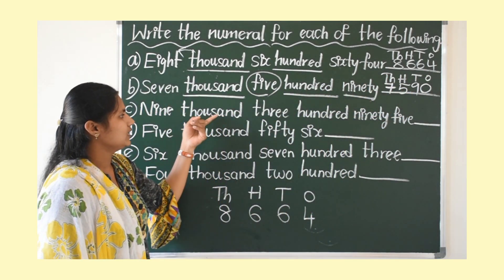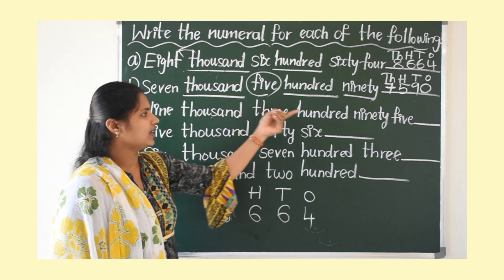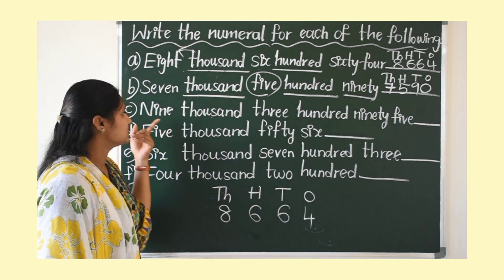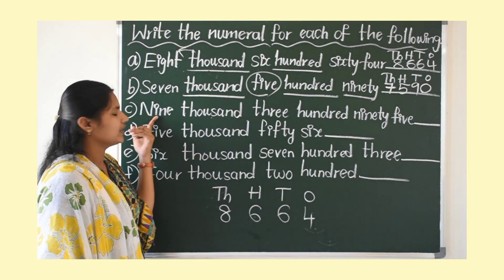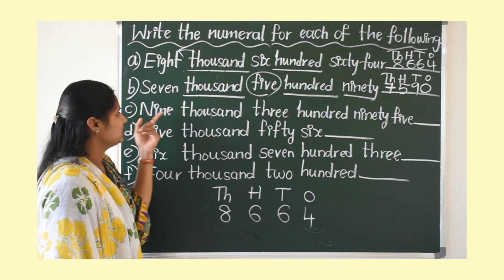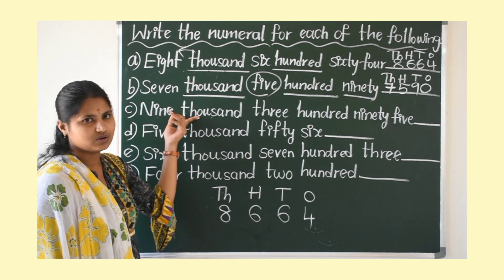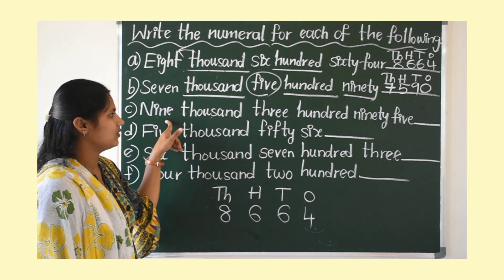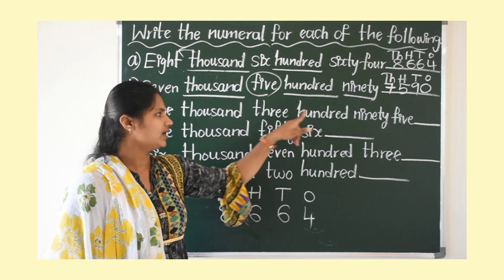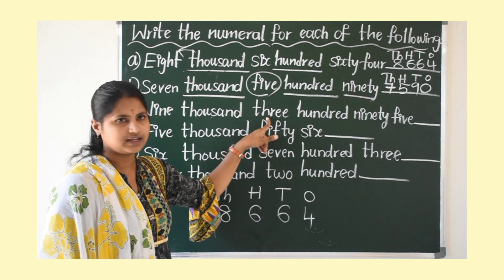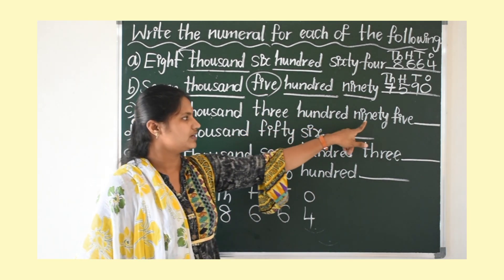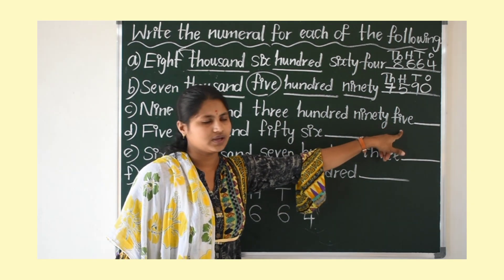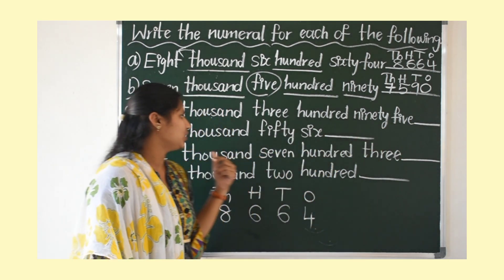Next: nine thousand three hundred ninety-five. Try to write this yourself. 9000's — write 9 in the 1000's place. 300 — how many 100's? 3. Next 10's: 90 means 9. And 5 in the 1's place. Try to write yourself.